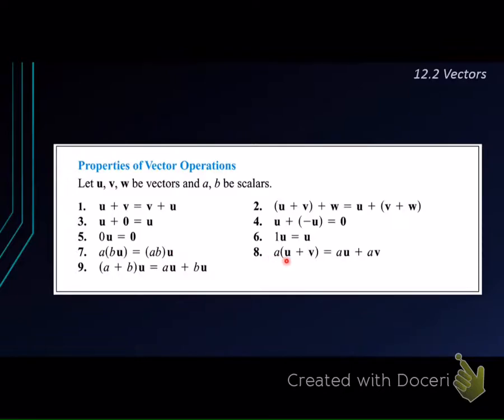Number eight, if we have to find the addition of the two vectors u and v first, then only multiply with a, it will be the same if we just multiply the a into the u and to the v, then only we find the summation.